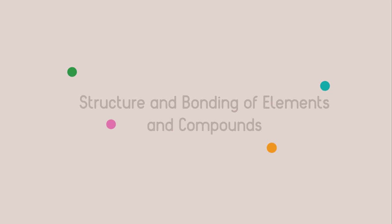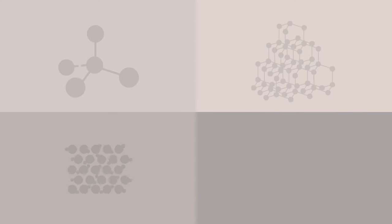Structure and bonding of elements and compounds part one. This two-part video explains why there are only four possible structures that form when elements bond.